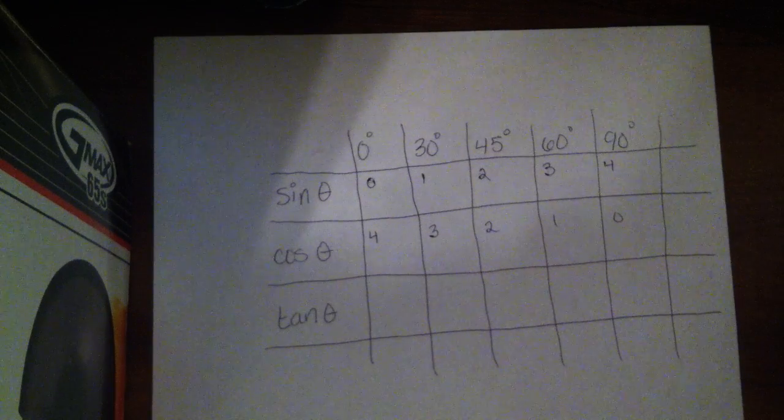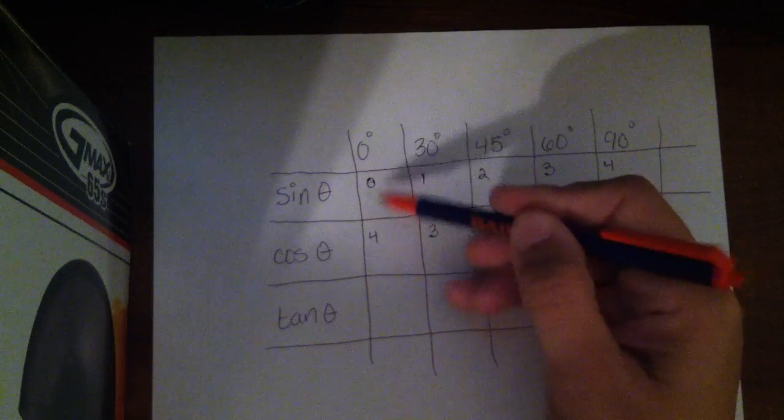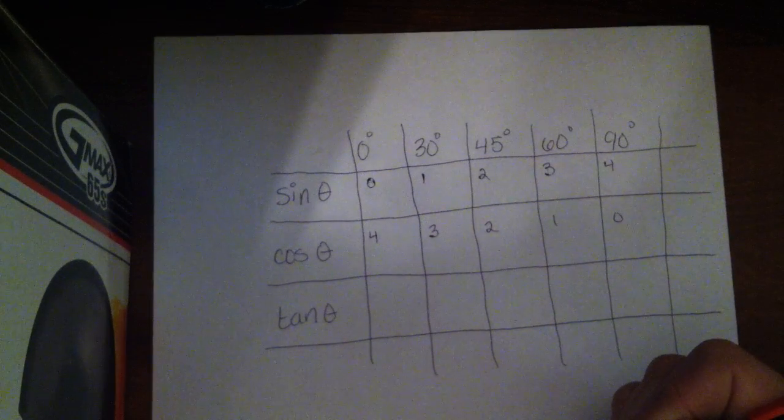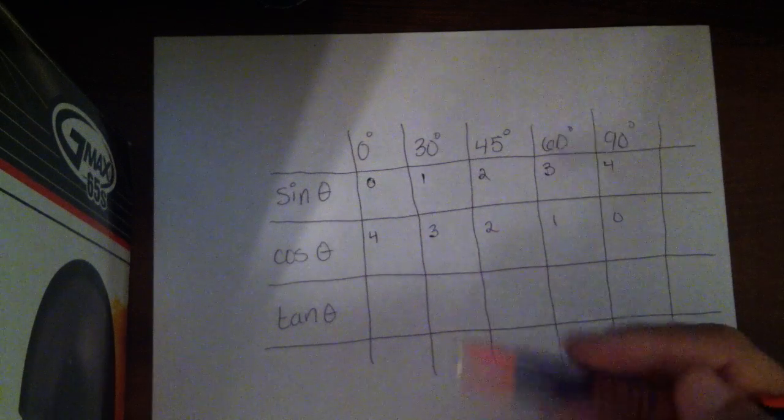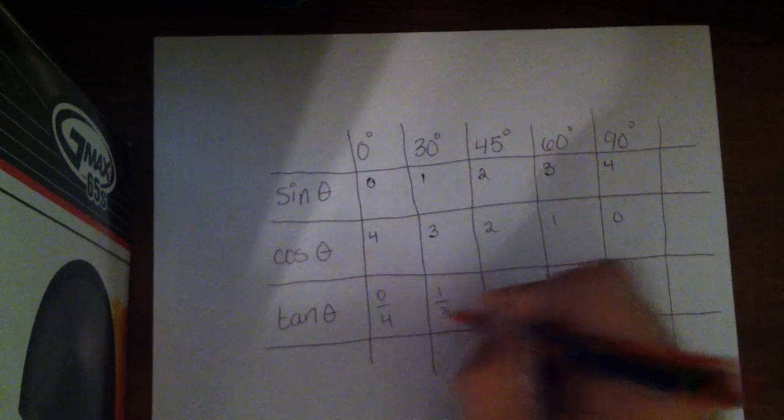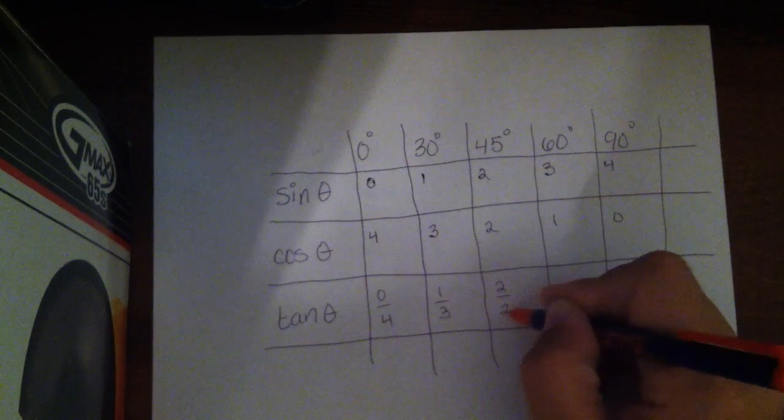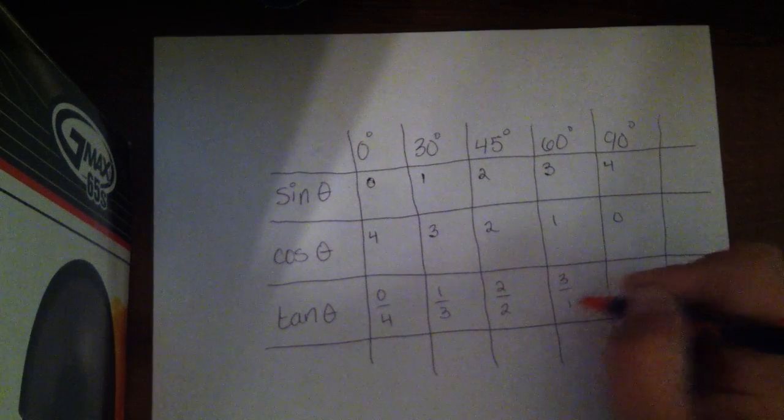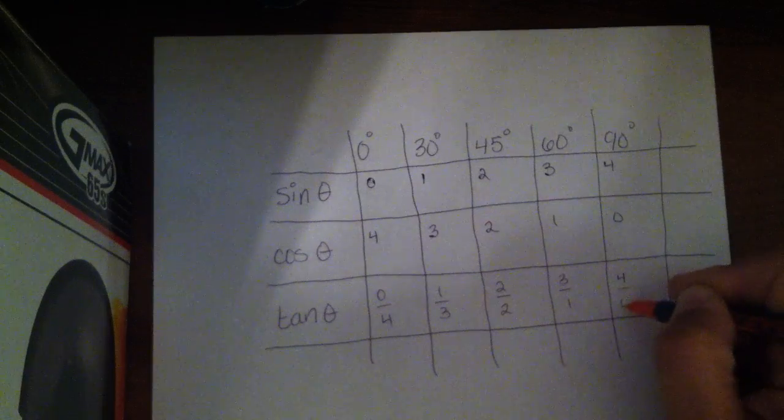For tangent, I'm going to take both of those numbers and put them in a fraction. So I'm going to say 0 over 4, 1 over 3, 2 over 2, 3 over 1, 4 over 0.